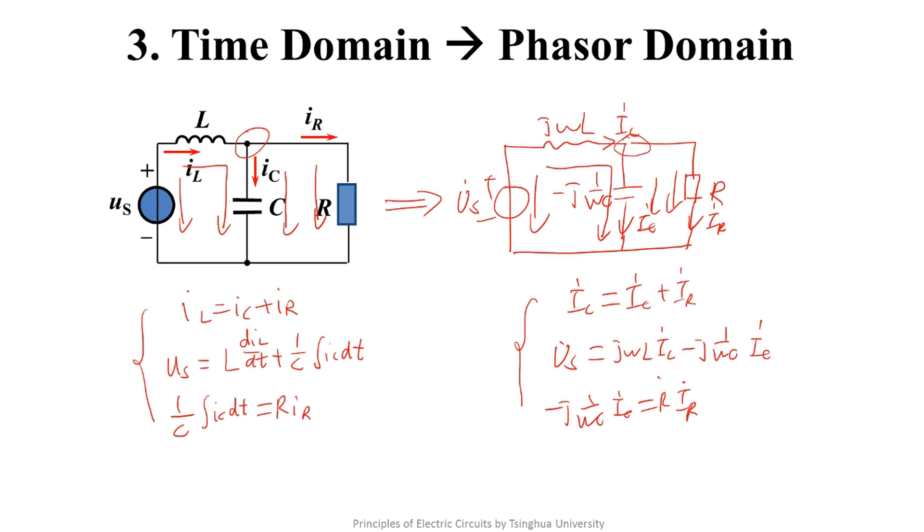These three equations are linear algebraic equations with complex coefficients of phasor IC, IL, and IR.